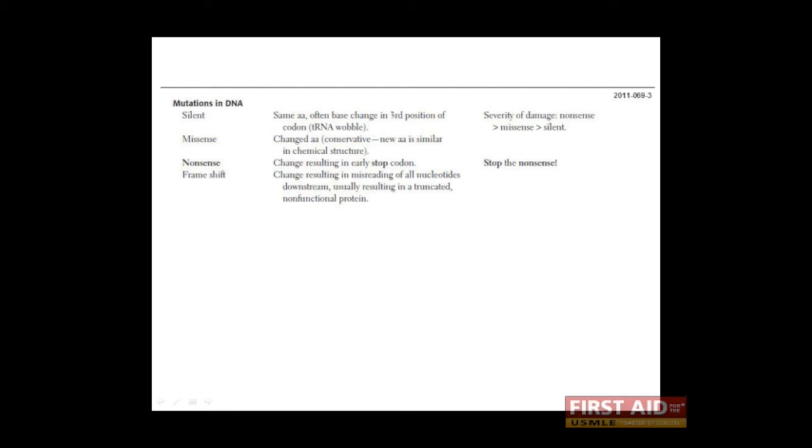For example, a mutation that results in the RNA transcript UUU encodes phenylalanine. If a mutation were to occur which resulted in the RNA transcript UUC, this would also encode for phenylalanine, and thus the mutation is silent.